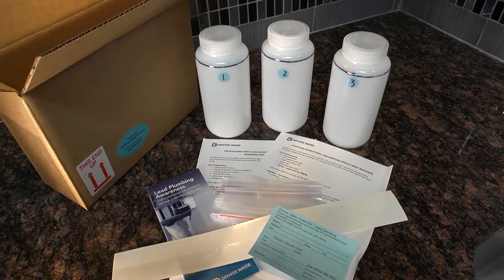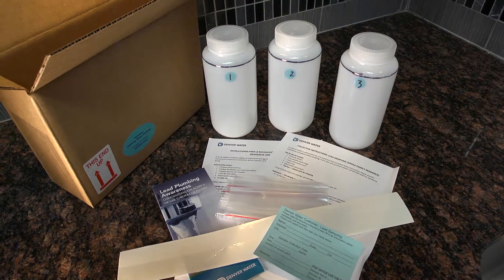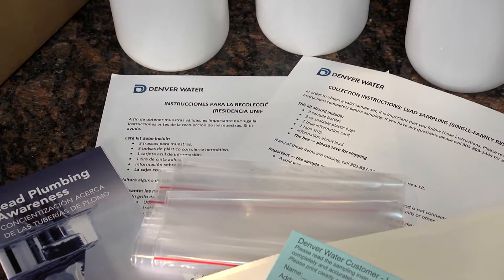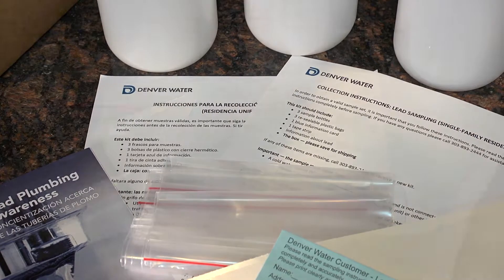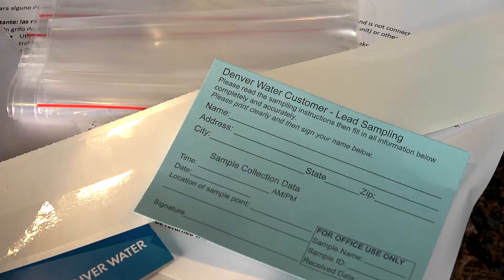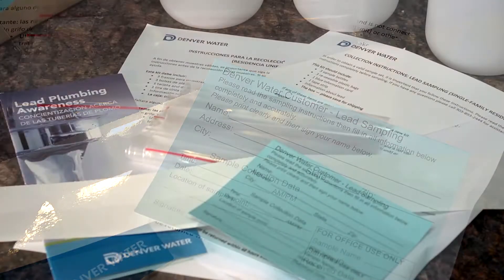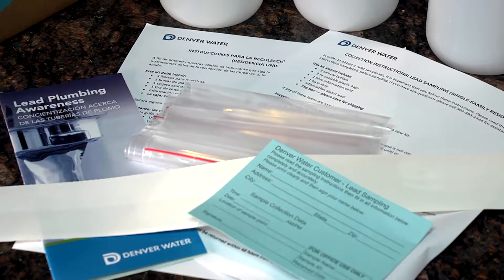The lead sampling kit includes three sample bottles, three resealable plastic bags, an instruction sheet, a blue information card, a strip of tape, information about lead plumbing, and a box for return shipping.